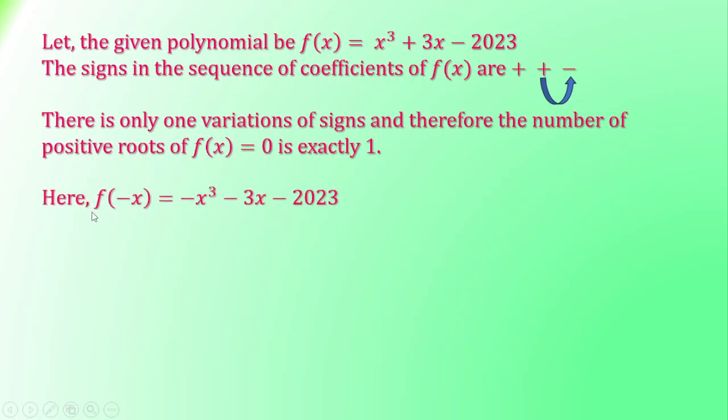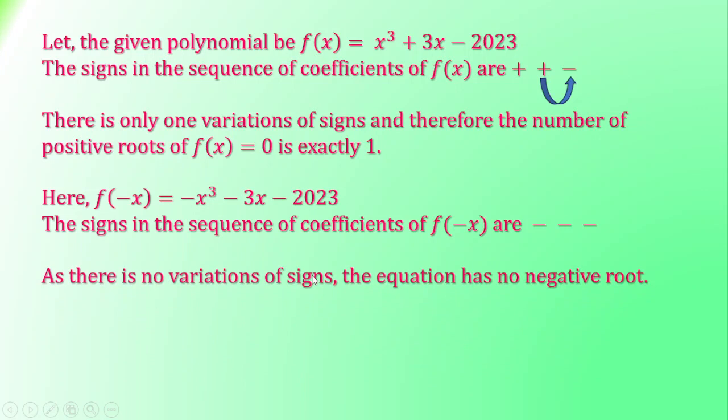Then, when we put -x instead of x, we get f(-x) = -x³ - 3x - 2023. Here the signs in the sequence of coefficients of f(-x) are: minus, minus, minus. We can see there is no variation of signs. So the equation has no negative root, we can say.